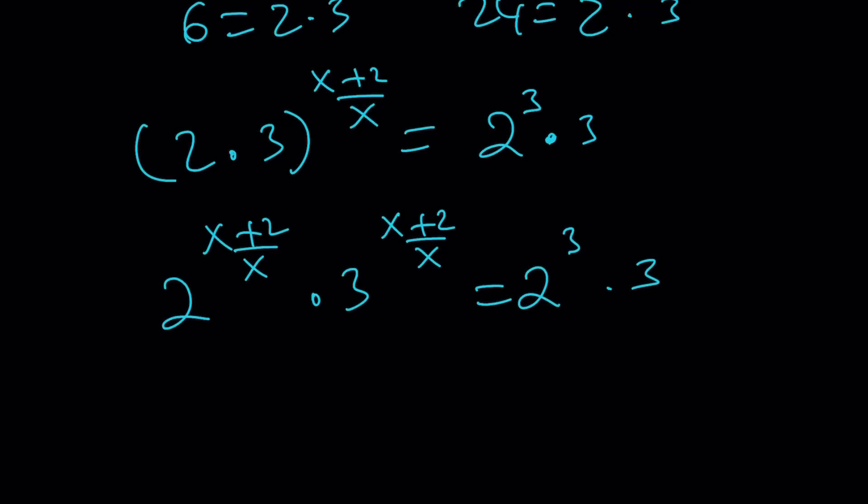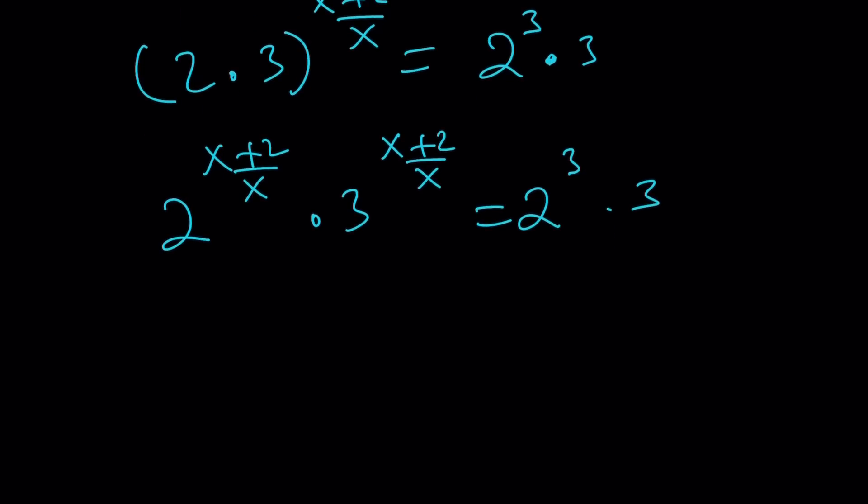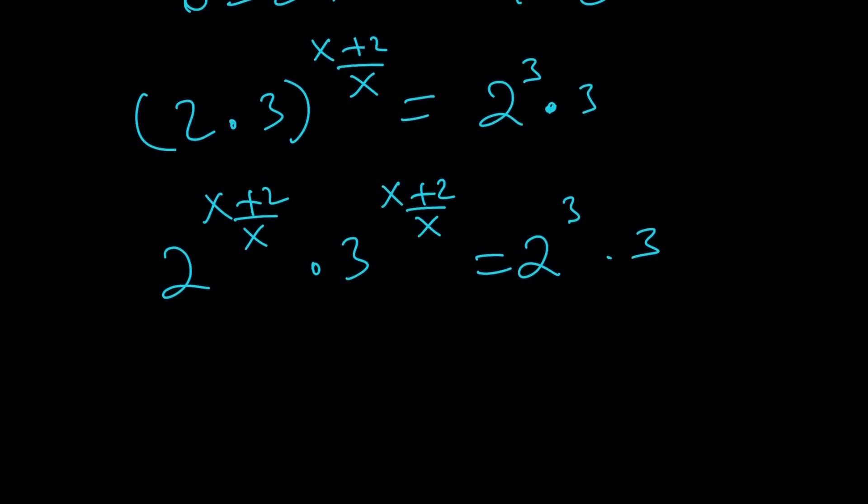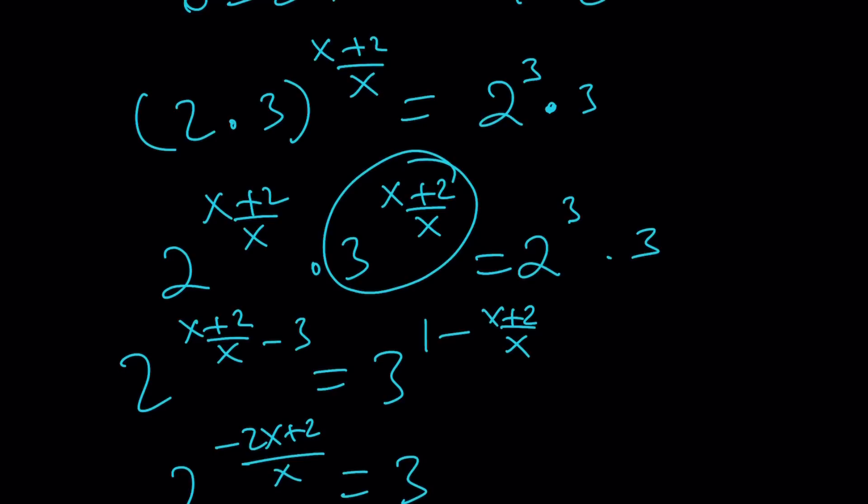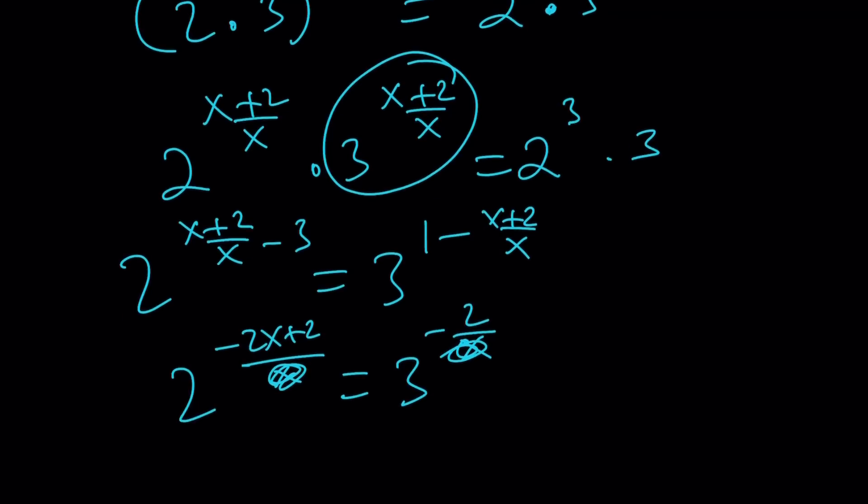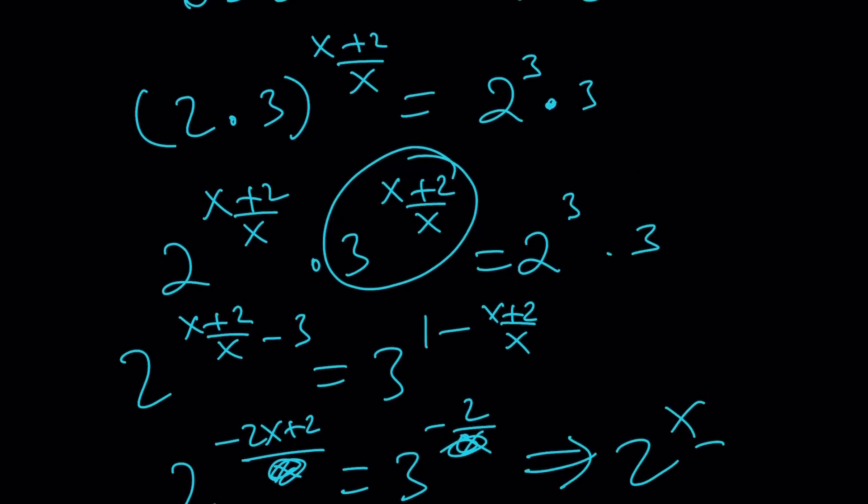Don't say x plus 2 over x is 3 or 1. That's not true. But put the powers together. We're going to put the powers of 2 together. Divide by 3. 2 to the power x plus 2 over x minus 3. And then divide both sides by this. You're going to get 3 to the power 1 minus x plus 2 over x. That's going to give you 2 to the power of negative x plus 2 over x. And 3 to the power x minus x plus 2 is going to be negative 2 over x. Get rid of the x's. Get rid of the negatives. And then from here, you're going to get 2 to the power x equals 6 again after a little bit of manipulation.